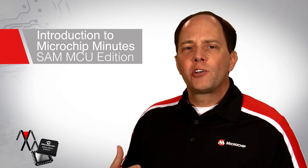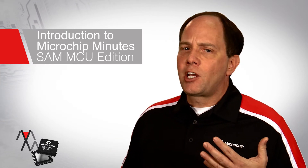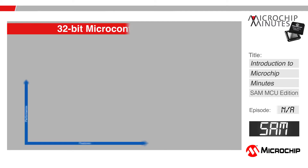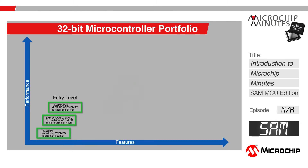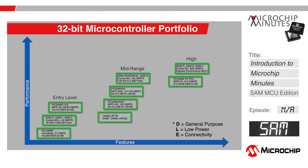This video series will focus on the SAM product offerings and cover the features and benefits of the different products. The SAM product line ranges from our entry-level products like the SAM-D10, which is a 48 megahertz Cortex-M0+, to our high performance devices like the SAM-SE70, which is a 300 megahertz 600 DMIP device.